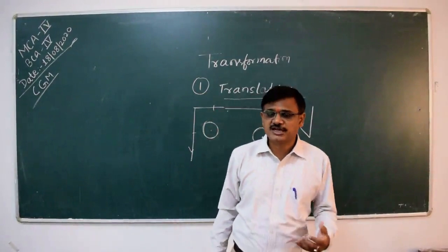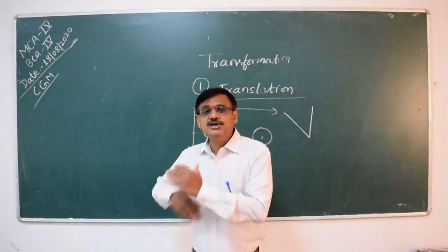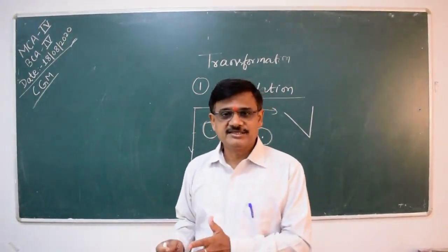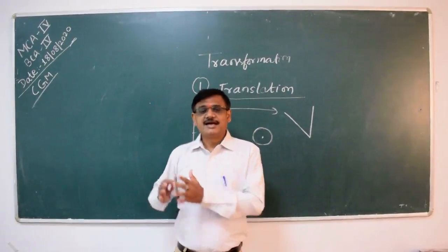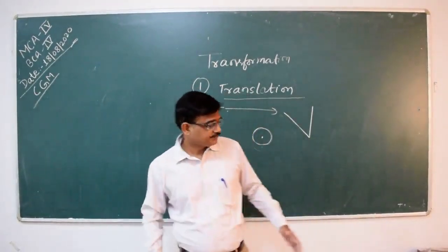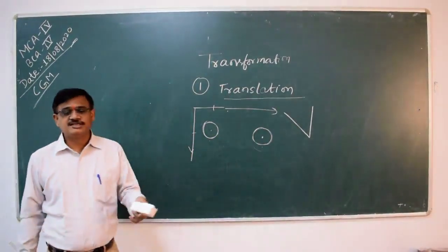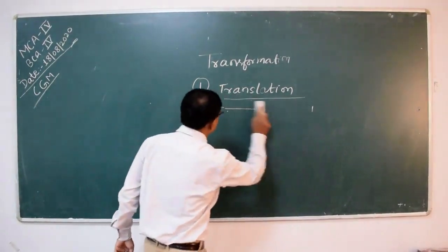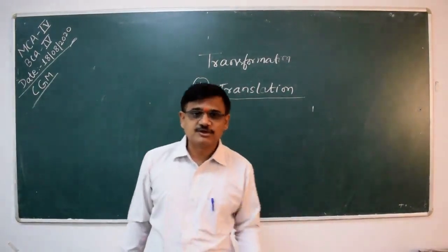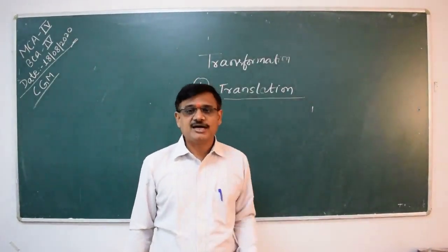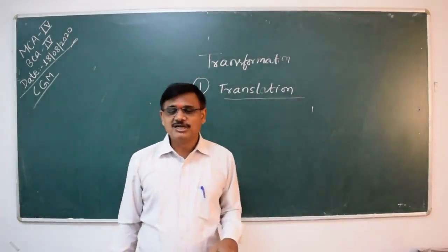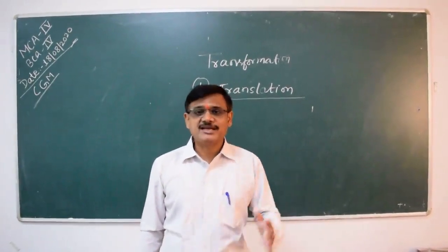What we do is regenerate a new image with a new coordinate value and erase the previously drawn image. The viewers then see that the previous object has moved to a new position. The user feels that the same object's position has changed, the direction has changed, or the shape or size has changed.